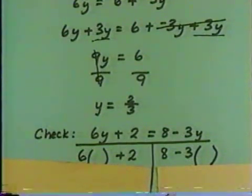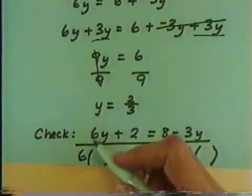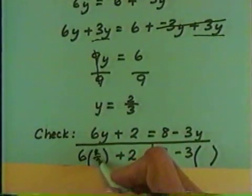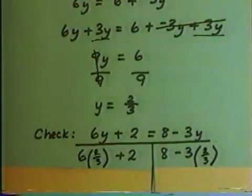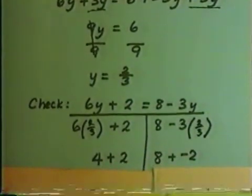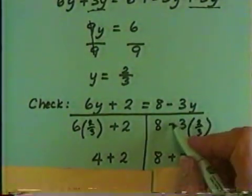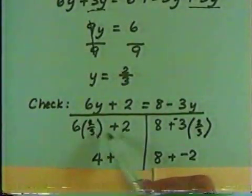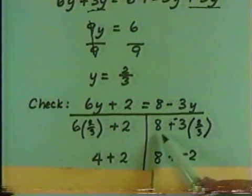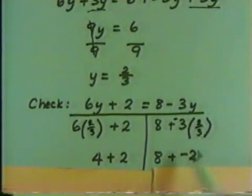Now, we have 6 in place of the y. We put a set of parentheses plus 2. 8 subtract 3 in place of the y. We put a set of parentheses. And so the 2/3 would fit in for the y. And that allows us to work out these two sides of the equation. 6 times 2/3 is 4. On the right, we have subtract 3 times 2/3, which makes it plus negative 3 times 2/3. So, 6 times 2/3 plus 2 becomes 4 + 2. 8 plus negative 3 times 2/3 becomes 8 plus negative 2.